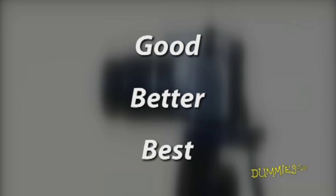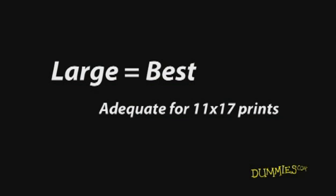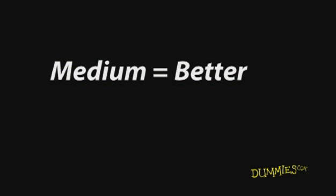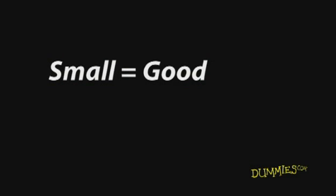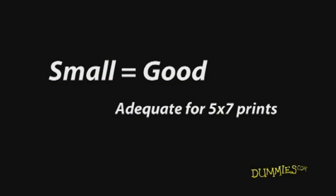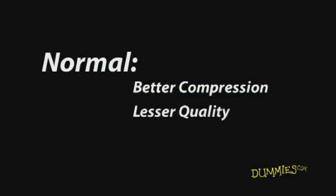Rather than Good, Better, Best, your camera might offer the following options. Large — similar to Best, adequate for 11x17 prints. Medium — similar to Better, adequate for 8x10 prints. Small — similar to Good, adequate for 5x7 prints. Fine — produces the best quality with less compression and therefore very large file sizes. Normal — produces better compression but lesser quality and therefore smaller file sizes.